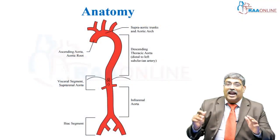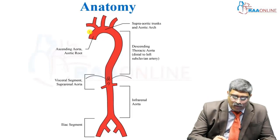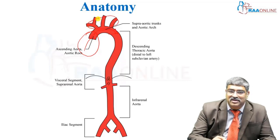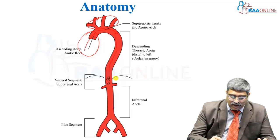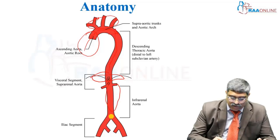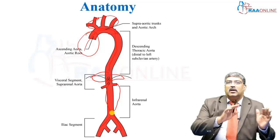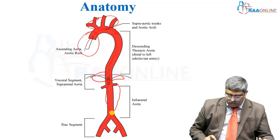Let us move into the anatomy of the aorta first, then we will move into the abdominal aorta. The aorta originates from the left ventricle as the ascending thoracic aorta, then continues as the arch of aorta where it gives rise to cerebral vessels, then continues down as the descending thoracic aorta. It pierces the diaphragm and enters as the abdominal aorta before bifurcating into the iliac arteries. This is one of the largest vascular structures in the body, supplying major organs of the thoracic and abdominal cavity.